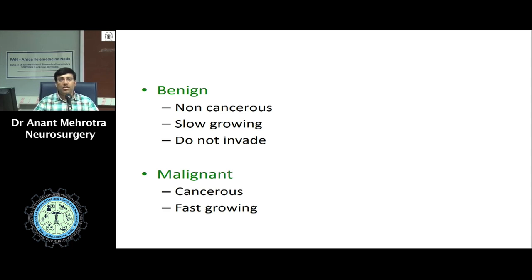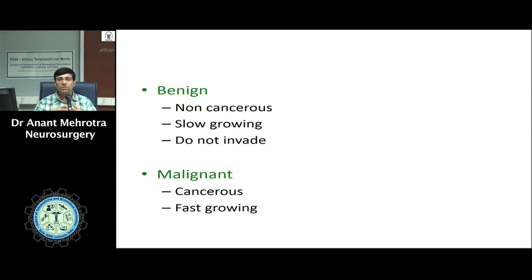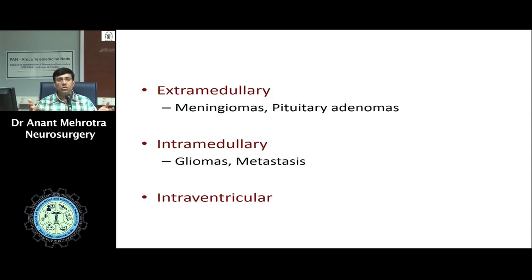Another way of classifying tumors is whether they are benign or malignant. Benign tumors are non-cancerous, extremely slow-growing, and tend to push the brain parenchyma away rather than invade it. Because of their slow-growing nature, they present with a long duration of history — ranging from several months to years, sometimes 5 to 6 years. Because they do not invade, complete excision is usually possible, as the plane between the tumor and the brain parenchyma is very well defined.